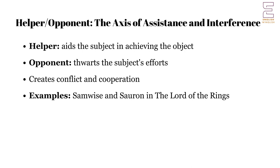In J.R.R. Tolkien's The Lord of the Rings, Frodo Baggins, the subject, is aided by numerous helpers, including Samwise Gamgee, Gandalf, and the Fellowship of the Ring. These helpers provide physical protection, guidance, and emotional support. Conversely, the opponents, such as Sauron and his minions, constantly threaten Frodo's quest to destroy the One Ring, the object. The interplay between helpers and opponents creates a rich tapestry of conflict and cooperation that drives the narrative forward.